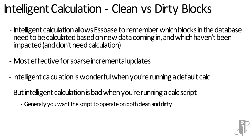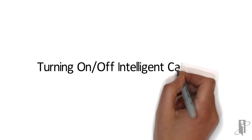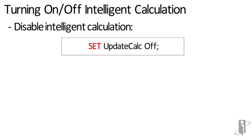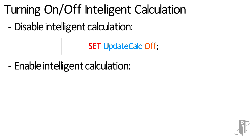Now if we're running a calc script, we don't want sbase to decide which blocks have already been calculated and only give us access to a few. Maybe we're running a clear script and we just finished calculating the whole database and we want to run our clear script. If we left intelligent calc on, we'd go to the index and say which blocks need to be calculated, and it would say none — because we just finished calculating everything — and then our next clear line would operate on absolutely nothing. So to turn off intelligent calculation just for the duration of the calc script, we just need SET UPDATE CALC OFF and then the semicolon.